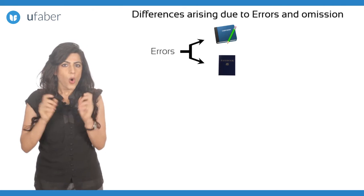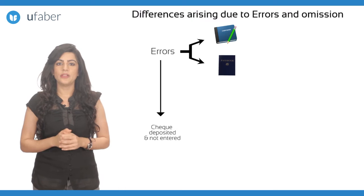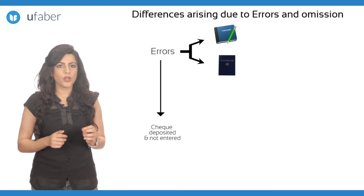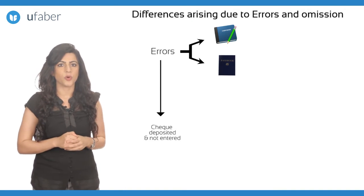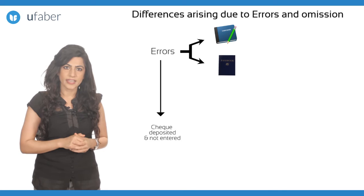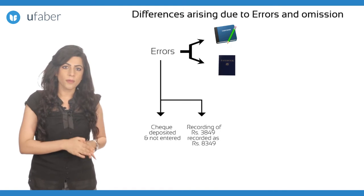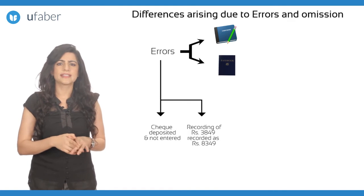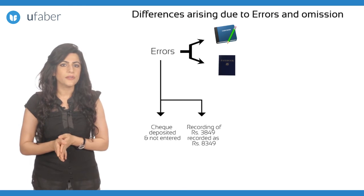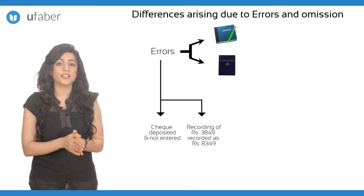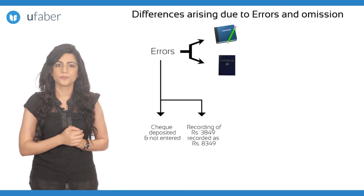1. Omission of entry: a cheque deposited in the bank account not entered in the cash book. 2. Recording of a wrong amount. For example, Rs. 3849 recorded as Rs. 8349.